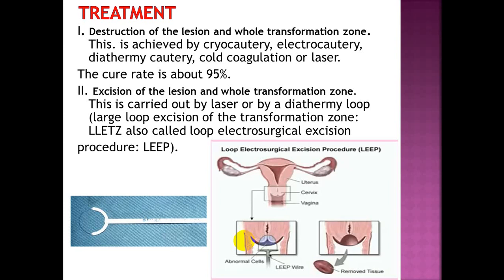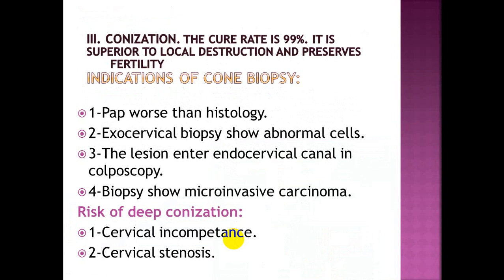Treatment involves destruction of the lesion and the whole transformation zone, achieved by cryocautery, electrocautery, diathermy, cold coagulation, or laser — with a cure rate of about 95%. Alternatively, excision of the lesion and the whole transformation zone is carried out by laser or diathermy loop — large loop excision of the transformation zone (LLETZ), also called loop electrosurgical excision. The cure rate for excision is 99%, it is superior to local destruction, and preserves fertility.